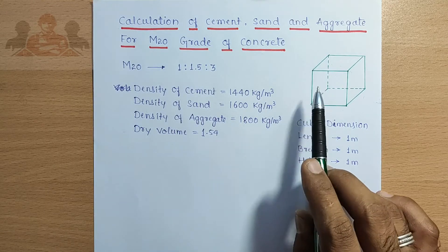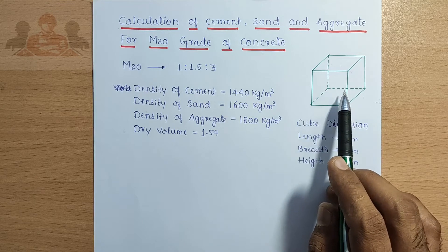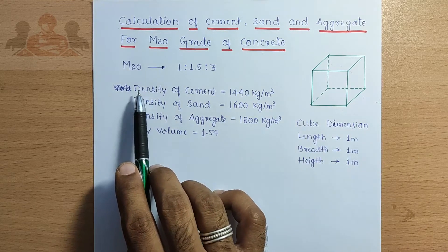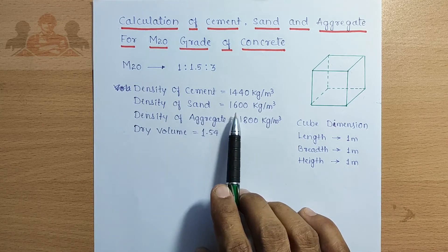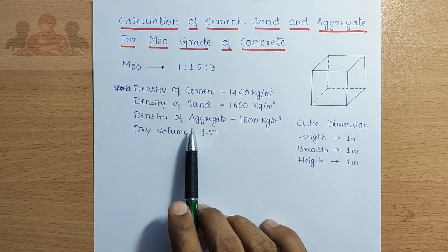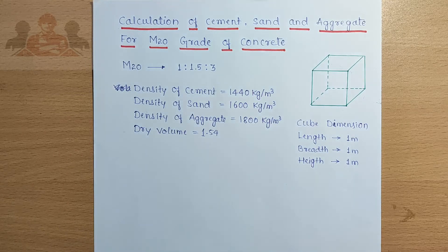This cube is 1 meter by 1 meter by 1 meter. This is 1 cubic meter. Density of cement is 1440 kg per meter cube. Density of sand is 1600 kg per meter cube. Density of aggregate is 1800 kg per meter cube. The dry value is 1.54.